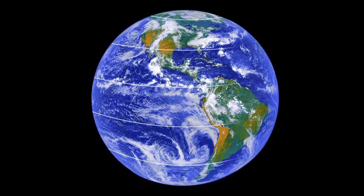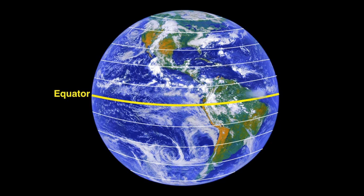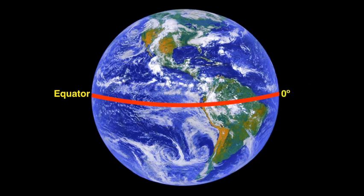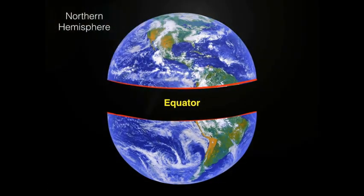Lines that run left to right are called lines of latitude, or latitude lines. Latitude lines extend from the center or main line known as the equator. The equator is in the center and is located at zero degrees latitude. It splits the Earth into hemispheres — a north hemisphere and a south hemisphere.